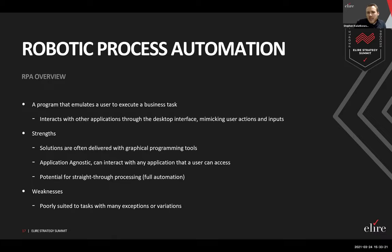One of the weaknesses of RPA bots is that if your task is complex — with lots of exceptions, lots of variations, lots of questions — you're very quickly going to make the bot extremely complex. You'd need to program every possible combination or permutation of exceptions. That's a key consideration when applying RPA: is this rule-based? Are there exceptions? A few exceptions the bot tools can handle, but with a lot of variability, it's probably less worth your time to build out every single exception in programming.